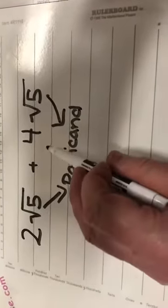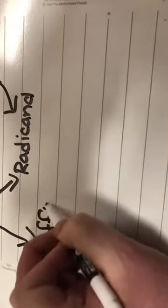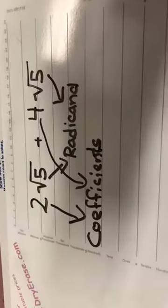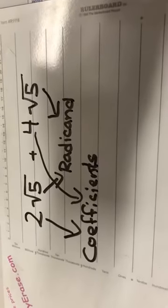Now when I add this problem, what I'm actually going to add is the two and the four. All I'm going to add is the two and the four. The two and the four are what we call the coefficients. Those are actually the numbers that we add.